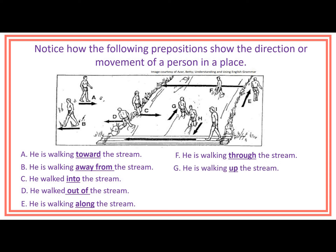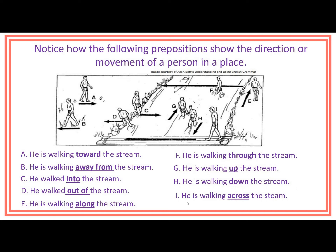Person G — he is walking up the stream. Person H — he is walking down the stream. And Person I — he is walking across the stream.